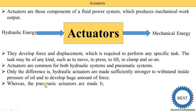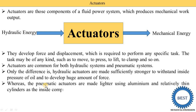Pneumatic actuators are made lighter using aluminium and relatively thin cylinders, as the inside compressed air pressure is just about five bar.